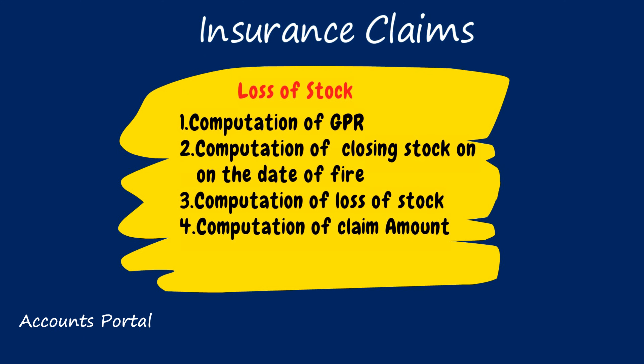My cherished students, we will quickly go over four simple steps to solve the sums, and I will add some value addition points that you may come across while solving the sums. Tip one: computation of gross profit ratio. If it is given, consider as it is. If two or more GP ratios are given, then consider the average.